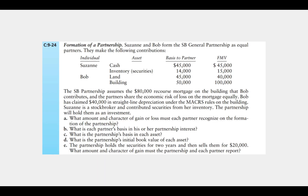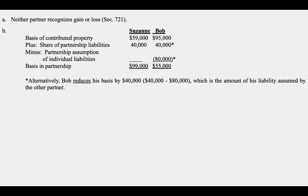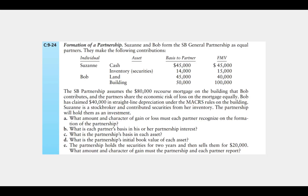For Bob, we start with the basis of his contributed property: $45,000 for the land and $50,000 for the building, totaling $95,000. We add his share of partnership liabilities—his half of the $80,000 mortgage is $40,000. Then we decrease the basis by the partnership's assumption of his individual liabilities: the full $80,000 mortgage was Bob's liability. So we subtract $80,000. That makes Bob's basis in the partnership $55,000.